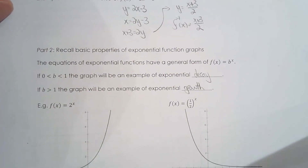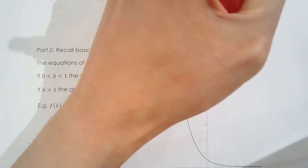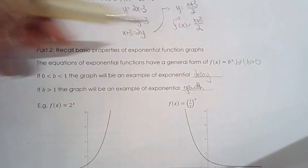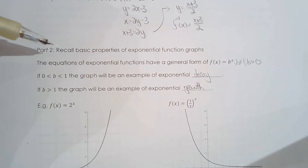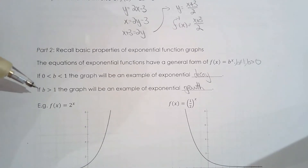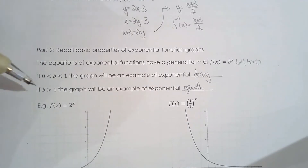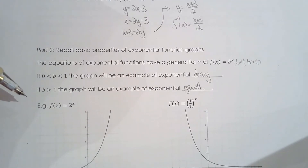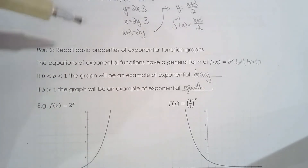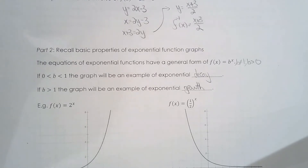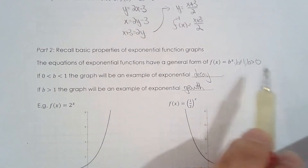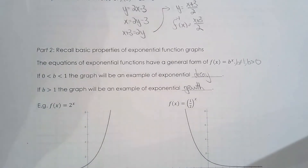The restriction on b is: b cannot equal one, and b must be greater than zero. The reason I want to go over this — something you learned in grade 11 — is because we're going to study the inverse of an exponential function. The inverse of an exponential function is our big focus for this unit: logarithmic functions. If you recall the properties of exponential functions well, your understanding of logarithmic functions will be very strong, because they're inverses of each other.